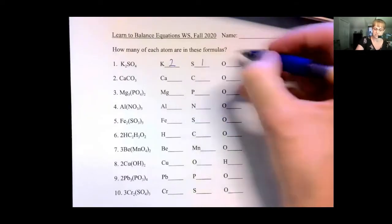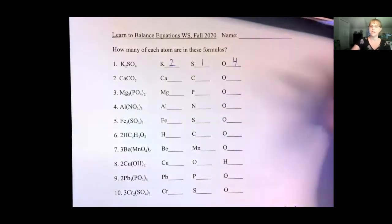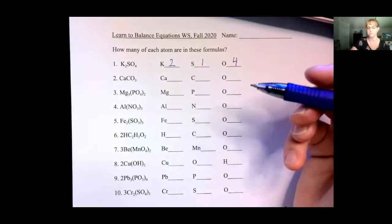So we have a single S — note the invisible one — and four oxygens. That gives us one sulfur and four oxygens. Pause this video and try number two.